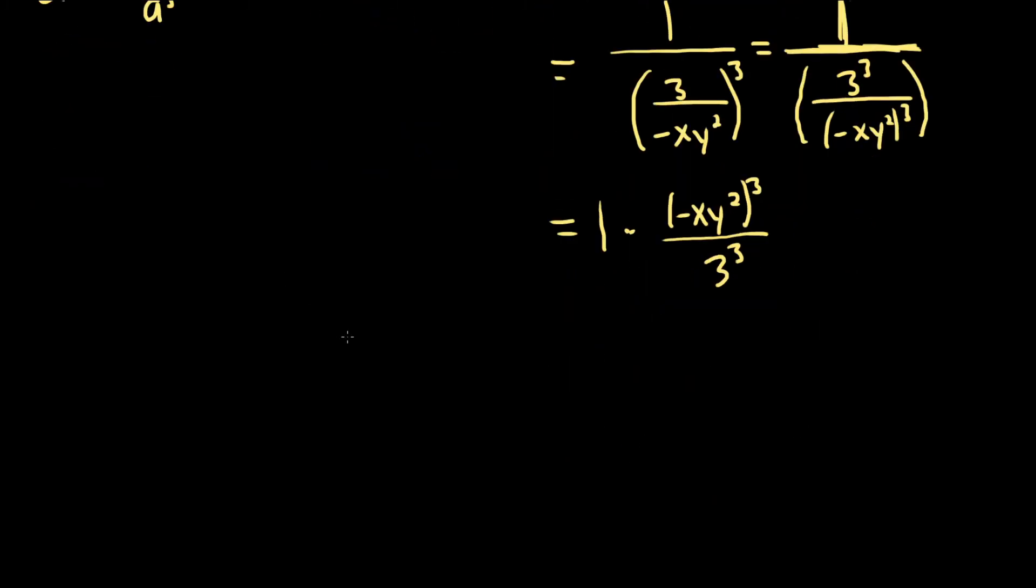Let's go ahead and do that multiplication. So we're left with negative x, y squared cubed over, and then three cubed is 27.